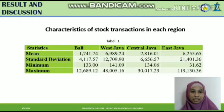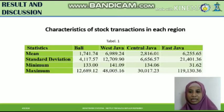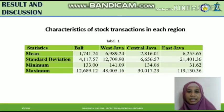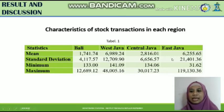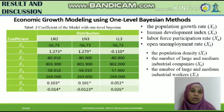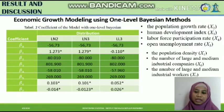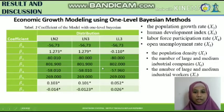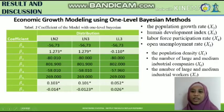For the results and discussion, first is the characteristic of stock transactions in each region. The highest and lowest values of share transactions are in East Java province, which varies greatly in stock transactions, as it has the highest standard deviation. However, the highest average stock transaction is in West Java. After that, we model economic growth using a one-level Bayesian method with seven predictors in the micro variables across three distributional patterns. The significant variables from all three distributions are population growth rate, human development index, labor force participation rate, and open unemployment rate.